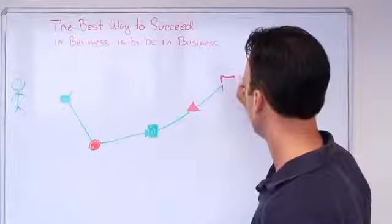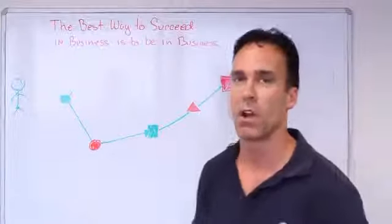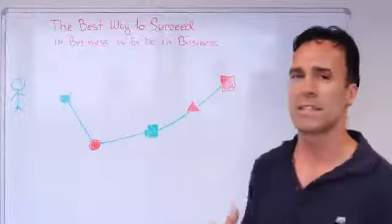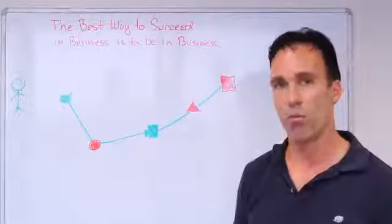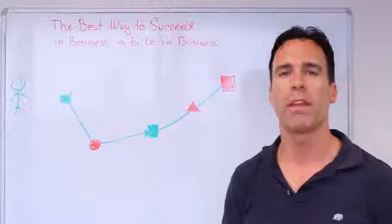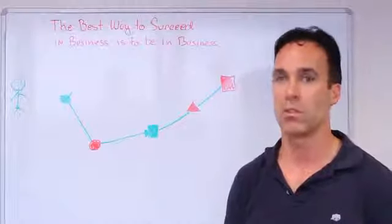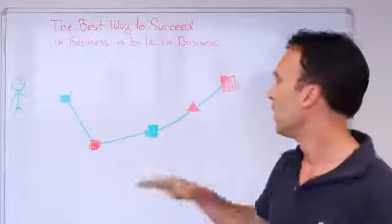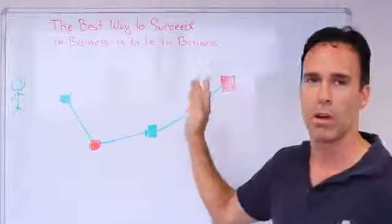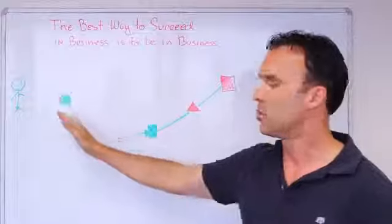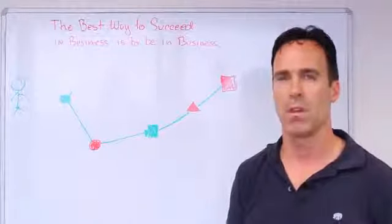As you can see, this continues. We could make dots, squares, triangles, maybe red squares. Hopefully you're getting the message I'm trying to convey. The best way to succeed in business is to be in business. If you're reading about, thinking about, procrastinating about, or talking about being in business, you're never gonna discover red squares or black boxes or whatever the journey of being in business will help you to uncover.